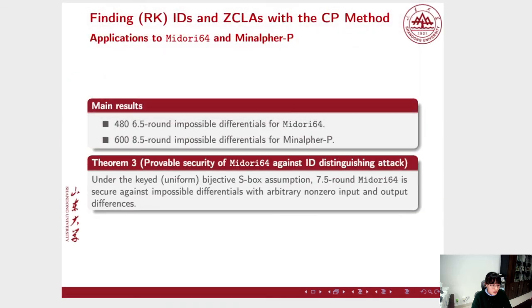These are results for the applications to Midori64 and Midori-P. We obtain some 6.5 round impossible differentials for Midori64, and some 8.5 round impossible differentials for Midori-P. Also, we give the provable security bound of Midori64.